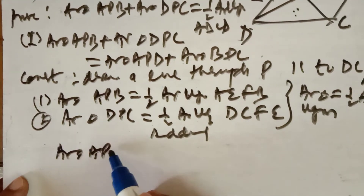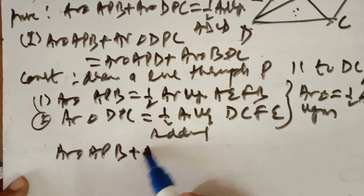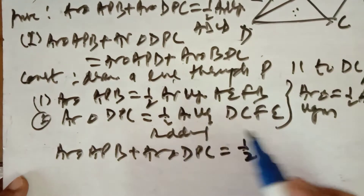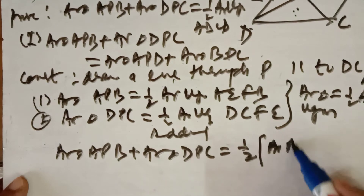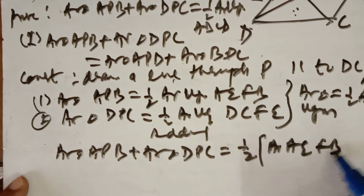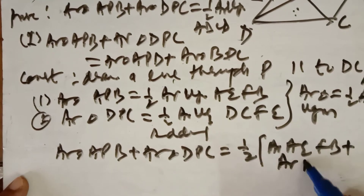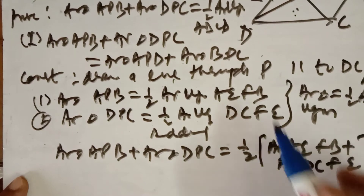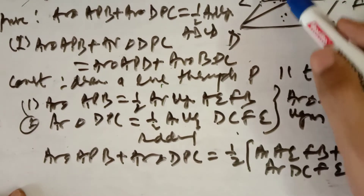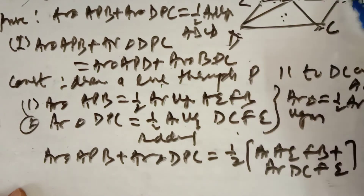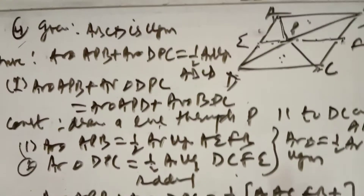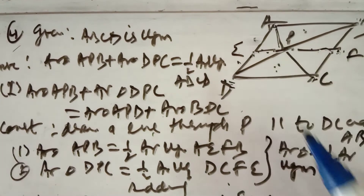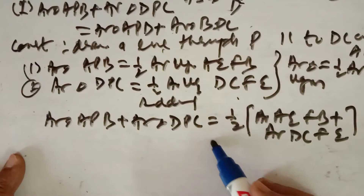Adding these two: area of triangle APB plus area of triangle DPC equals half times (area of AEFB plus area of DCFE). When you add AEFB and DCFE together, you get ABCD. So area of triangle APB plus area of triangle DPC equals half the area of parallelogram ABCD.